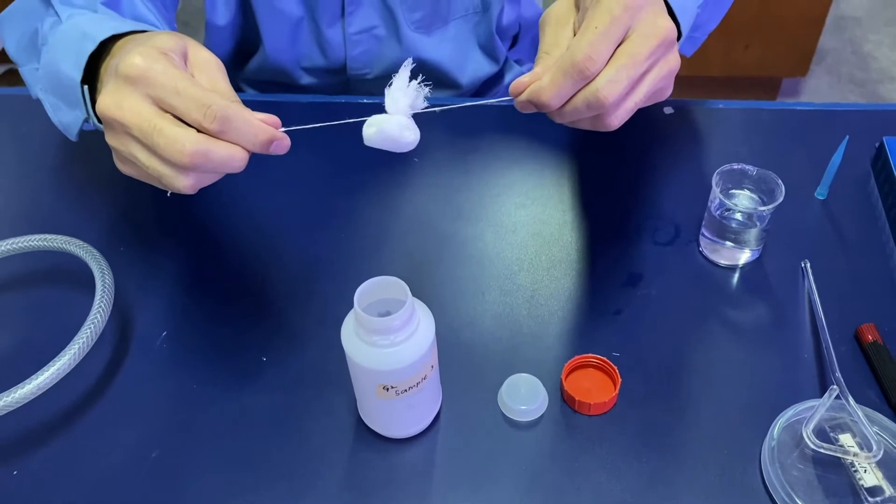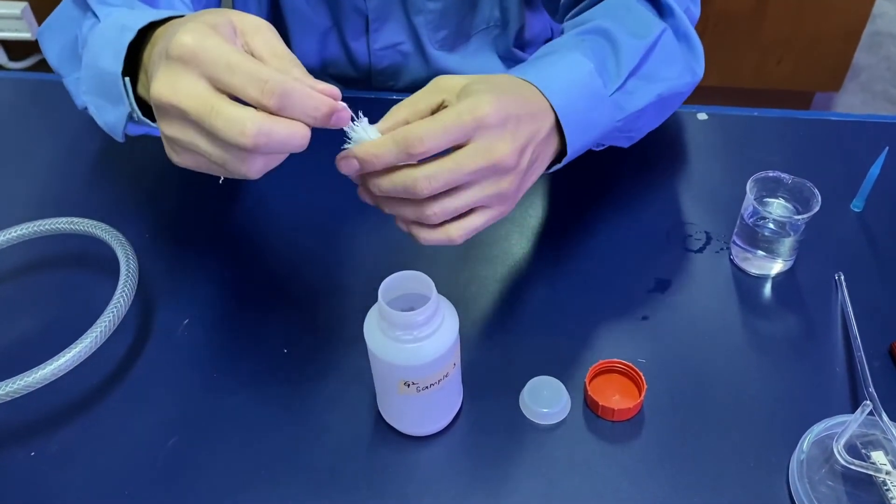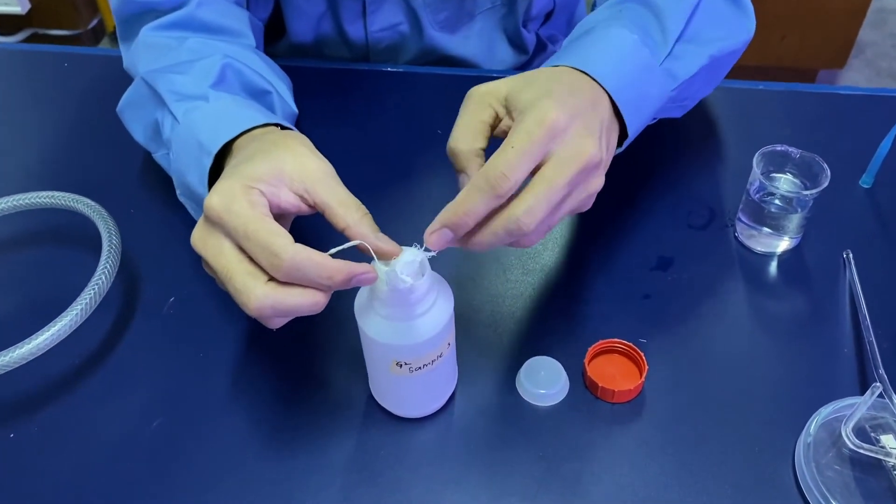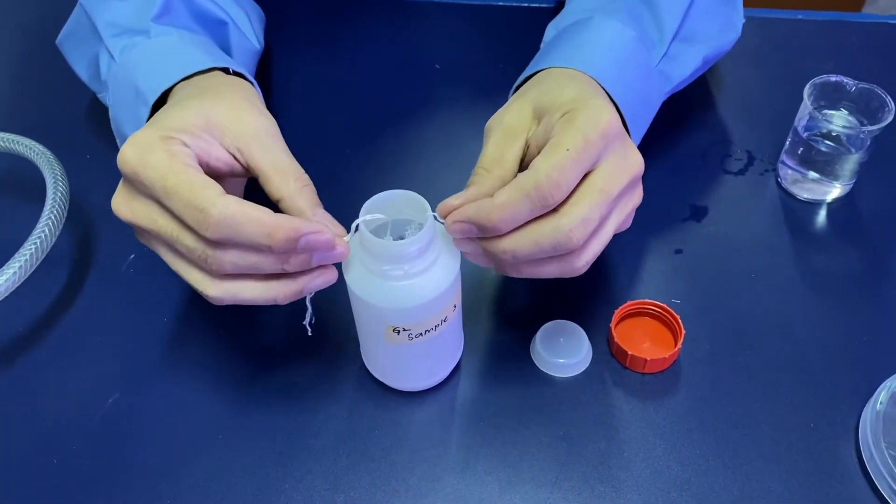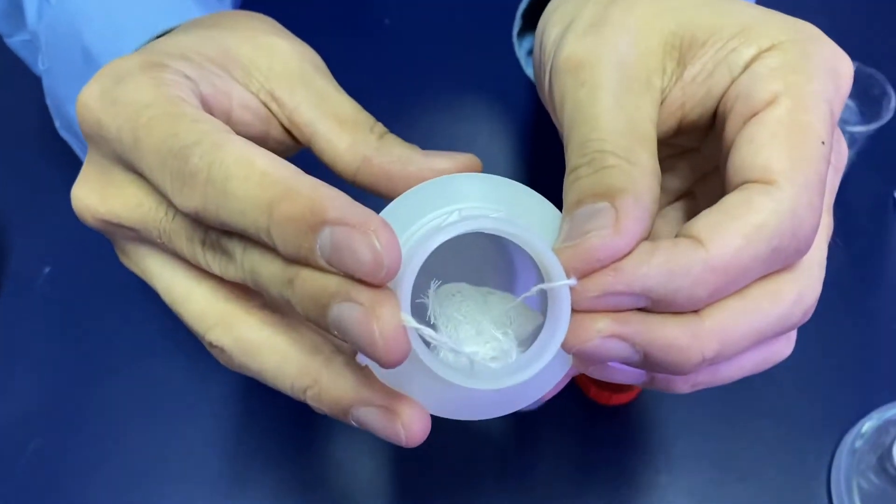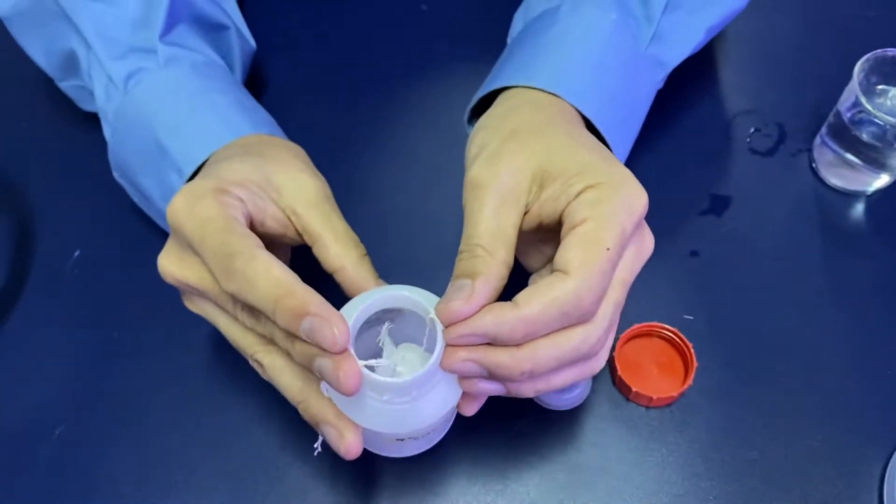Once it's tight, place the bag of soil carefully hanging in mid-air in the bottle so that it doesn't touch the solution at the bottom.